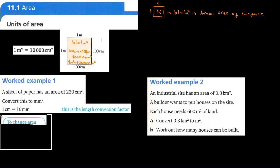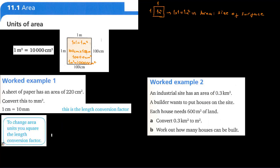When converting area units, we need to square the length conversion factor. So if one centimeter equals 10 millimeters, then one centimeter square is equal to 100 millimeters square.